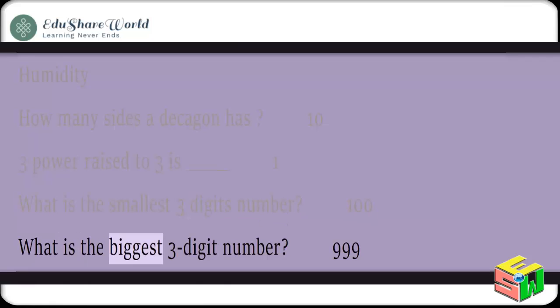What is the biggest 3-digit number? 999.